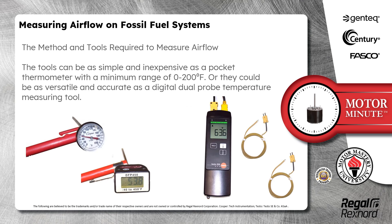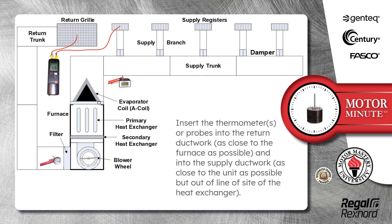The tools can be as simple and inexpensive as a pocket thermometer with a minimum range of 0 to 200 degrees Fahrenheit, or they could be as versatile and accurate as a digital dual probe temperature measuring tool. Insert the thermometers or probes into the return ductwork as close to the furnace as possible, and into the supply ductwork as close to the furnace as possible, but out of line of sight of the heat exchanger.